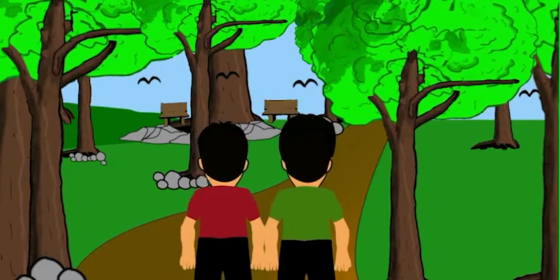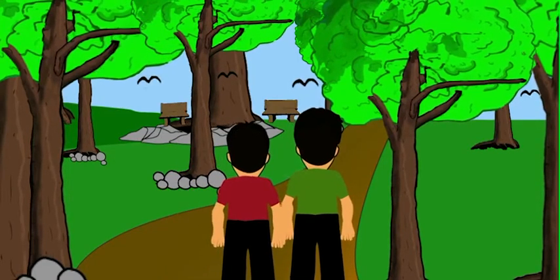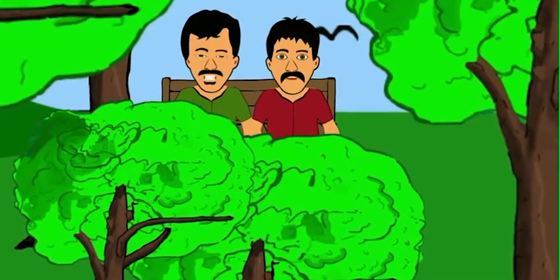Vijay and Raju were best friends. One day, they decided to go into a forest, where they were enjoying the beauty of nature.